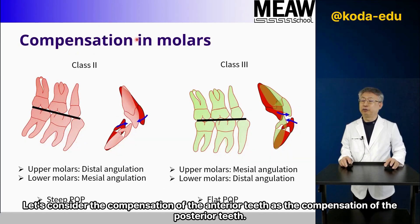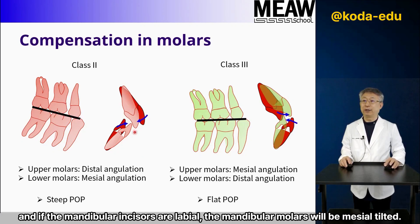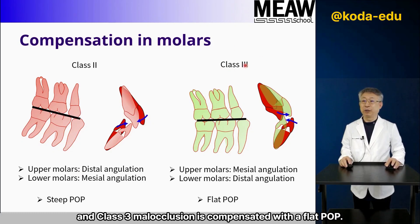Let's consider the compensation of the anterior teeth as it relates to the posterior teeth. If the maxillary incisor is lingually inclined, the maxillary molars will be distally tilted. If the mandibular incisors are labial, the mandibular molars will be mesially tilted. In terms of the occlusal plane, Class 2 malocclusion is compensated with a steep POP, and Class 3 with a flat POP.